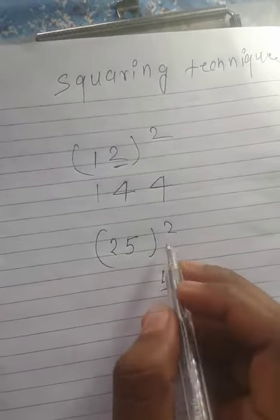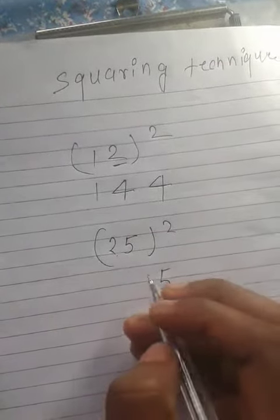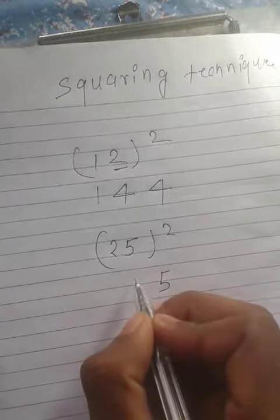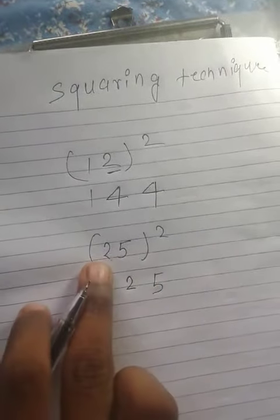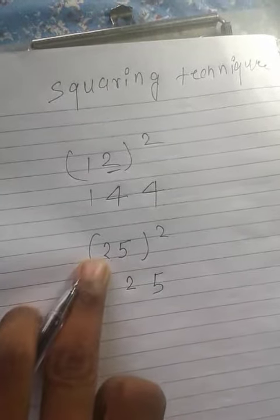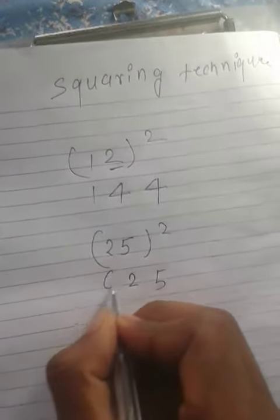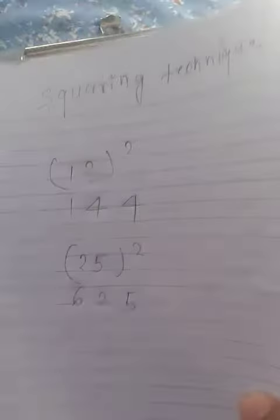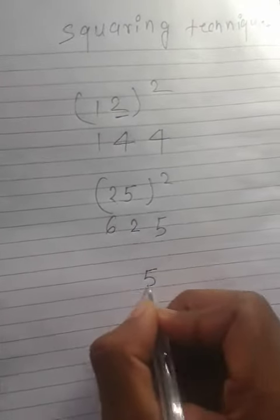Adding the previous carry of 2, it becomes 22 and we have carry 2. Square of 2 is 4, and adding 2, it becomes 6.